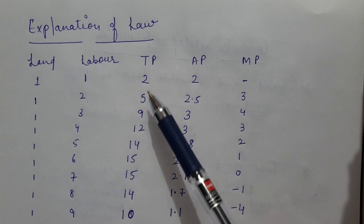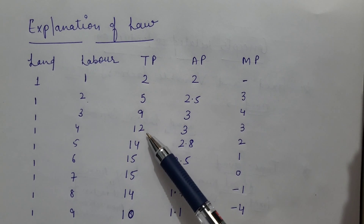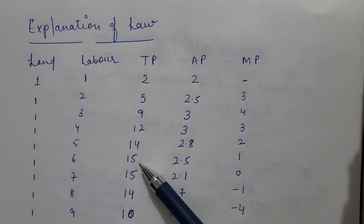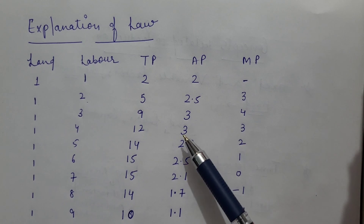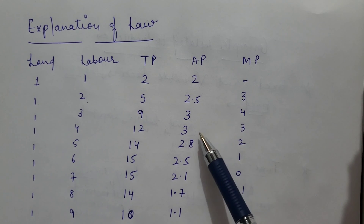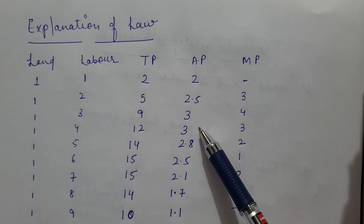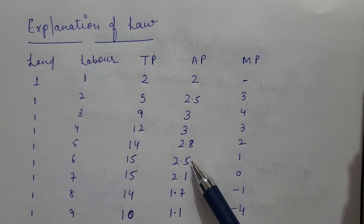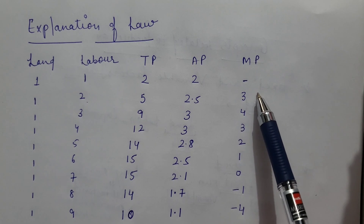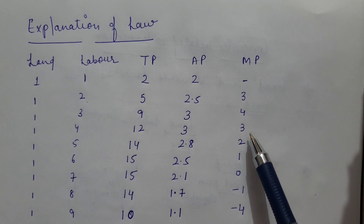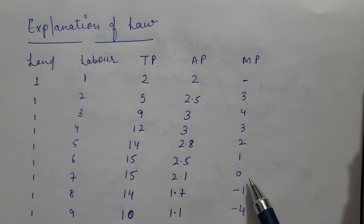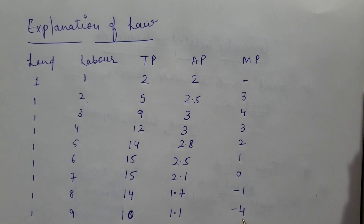It is clear from the table that total product first increases at an increasing rate and after that at a decreasing rate. Average product increases and reaches its maximum point, then starts declining. Marginal product first increases, then starts diminishing until it reaches zero, and after that it turns negative. Now, with the help of a diagram, we will clarify this concept.